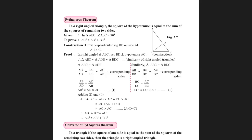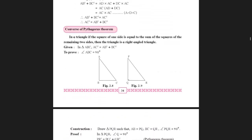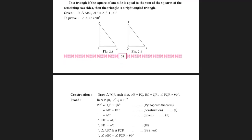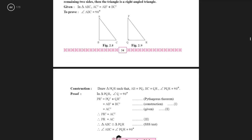The converse of Pythagoras theorem states: in a triangle, if the square of one side is equal to the sum of the squares of the remaining two sides, then the triangle is a right angle triangle. Given AC squared equals AB squared plus BC squared, we must prove that angle ABC equals 90 degrees. For construction, draw triangle PQR such that AB equals PQ, BC equals QR, and angle PQR is 90 degrees.